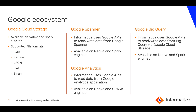The Google ecosystem now has four new connectors: Google Cloud Storage, Google Spanner, BigQuery, and Google Analytics — all supported in both native and Spark modes using the latest Google APIs. Google Cloud Storage also supports various complex file formats including Avro, Parquet, and JSON, as well as support for binary data types.